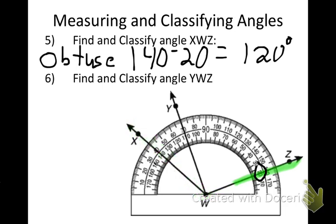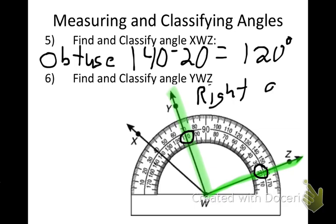Next, angle YWZ — same idea. I can use the angles and subtract them: 110 to 20 gives me 90 degrees — that is a right angle. How come you can't use the top? You can. If I do the top ones, I'd be at 160 to 70, which 160 minus 70 is still 90. So you can use either one. You just can't mix the top and the bottom at the same time.